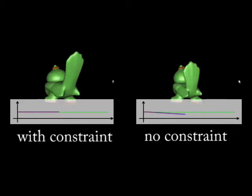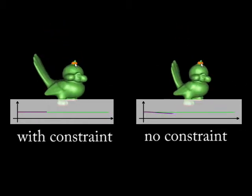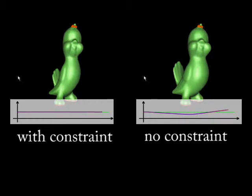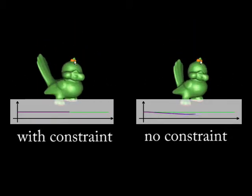The volume constraint is for preserving volume during deformation. This is useful for incompressible objects. Here the green line indicates the original volume, while the purple curve indicates the volume of the deformed mesh.